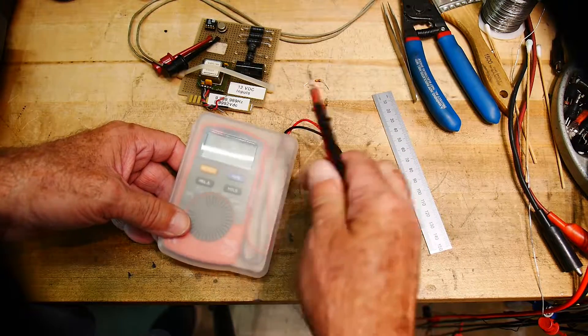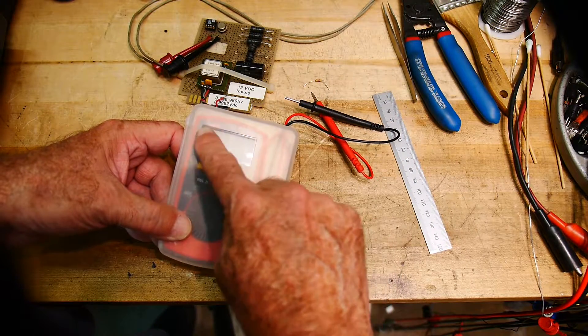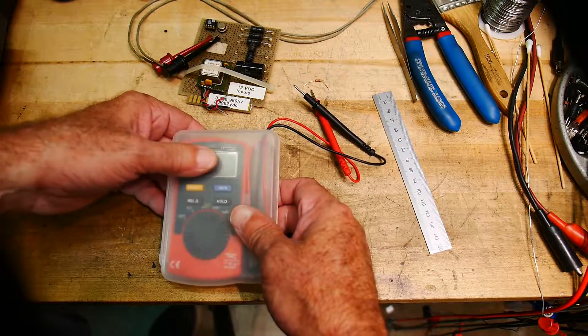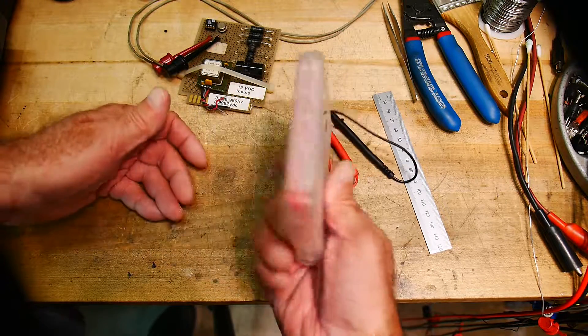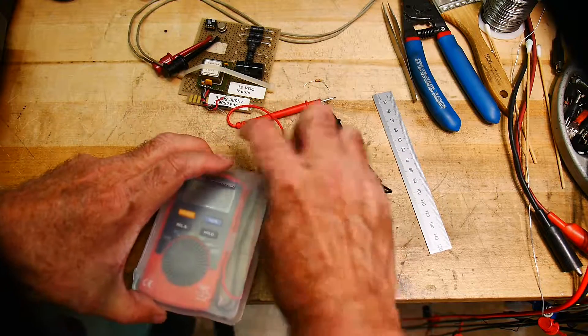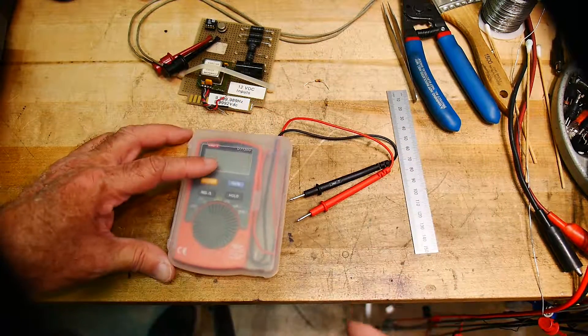So you can actually have the leads come out and have this thing in here, and there's actually a clear window here. So you can actually read the meter. You have to open it up to turn it on, but then you can read the meter through the window here and I don't even have to take it out of this little case. So yeah, it's pretty cool.